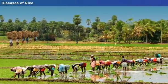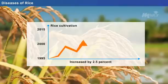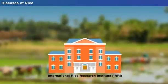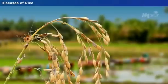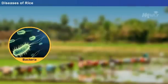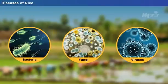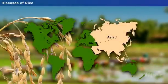Do you know, more than 250 million farmers cultivate rice in Asia. Over the past three decades, the production of rice has increased by 2.5% every year for meeting the growing food demands. However, a study conducted by the International Rice Research Institute (IRRI) revealed that on an average, farmers across the world lose 37% of their rice yield due to pests and diseases. Most of the diseases in rice are caused by several organisms such as bacteria, fungi, and viruses.